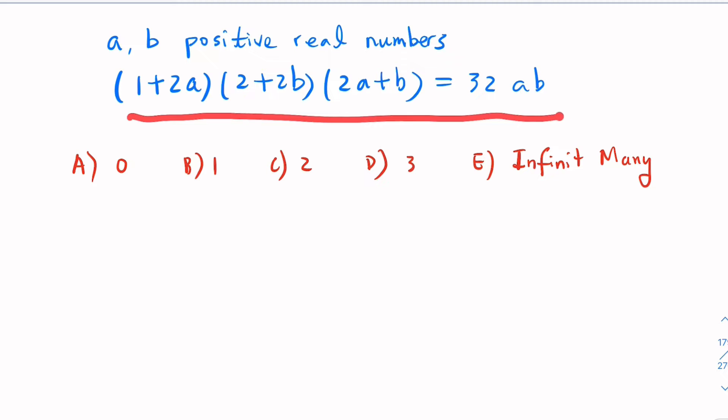When you see two variables and one equation, you may want to choose the answer 'infinitely many pairs.' However, it may not be the case, because real numbers may not satisfy the equation at all.